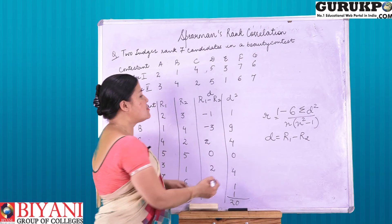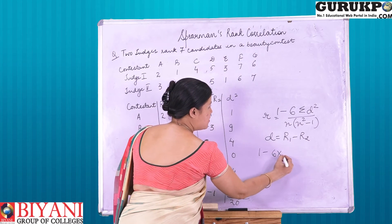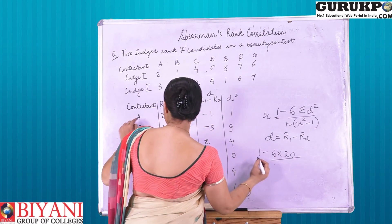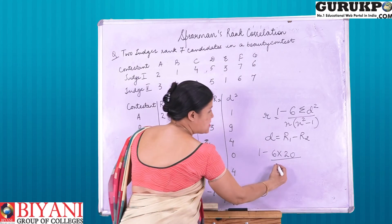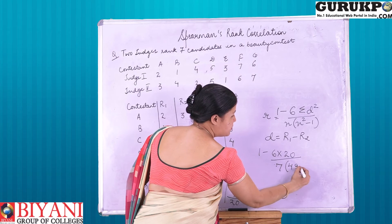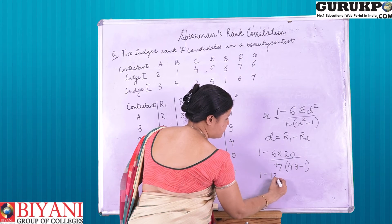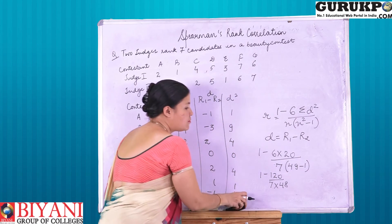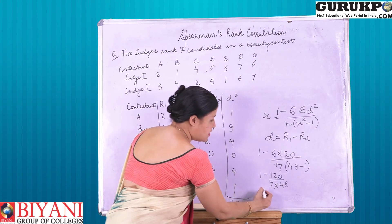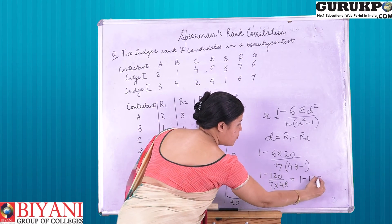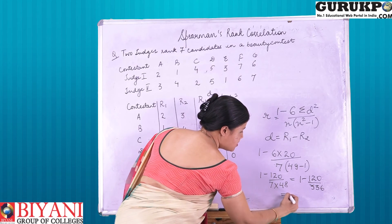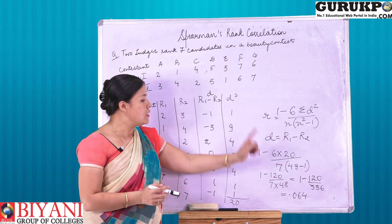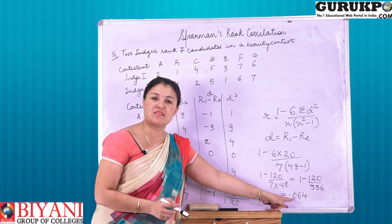Now we have to apply the same in the formula. n is 7, that is 7 candidates given to us. Here it comes to 1 minus 120 upon 336, that is 0.64. So the rank correlation calculated is 0.64.